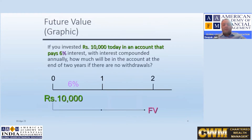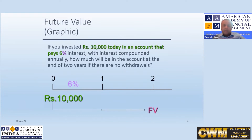Suppose you invested 10,000 today in an account that pays 6% interest with interest compounded annually. How much will be in the account at the end of 2 years if there are no withdrawals? So 10,000 becomes the present value, 6% becomes the rate of interest, and after 2 years what you will get is the future value. This is a compounding problem where I know the present value, the time, the rate of return, and I have to find out the future value.